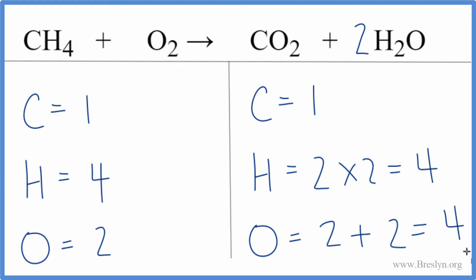To fix this, we can change the coefficient in front of the O2 to 2. So now we have 2 O2 molecules. 2 times 2. That'll give us 4. And now everything is the same on each side of the equation. We say this equation is balanced.